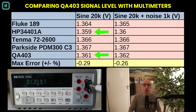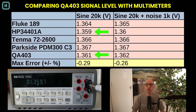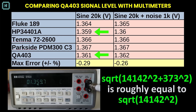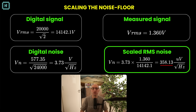This shows that the QA403 is extremely well calibrated. Also very nice is the result of the Parkside, a €15 multimeter from the local supermarket, showing a very small error — because the signal is dominated by a sine wave, even inexpensive meters measure that correctly. Another observation is that measuring the signal with or without the noise hardly affects the voltage readout, because in an RMS measurement the signal and noise are added in quadrature. Since the RMS noise voltage is much smaller than the RMS signal voltage, its contribution hardly changes the result. Now that you know the signal voltage very accurately, you can scale the noise floor to get its voltage noise spectral density.